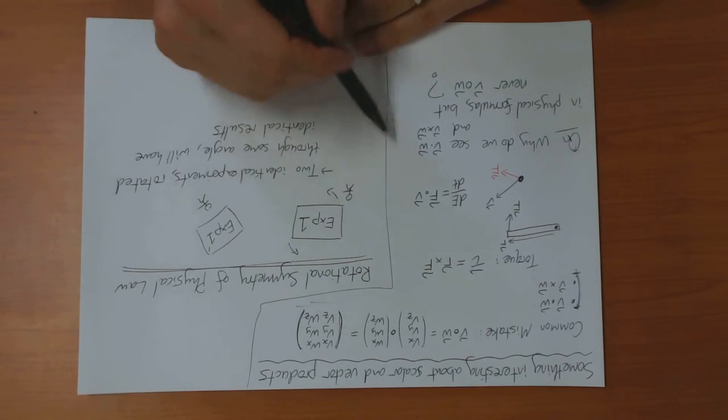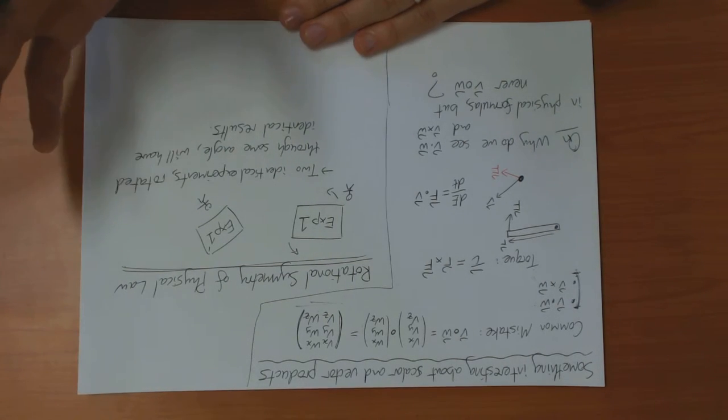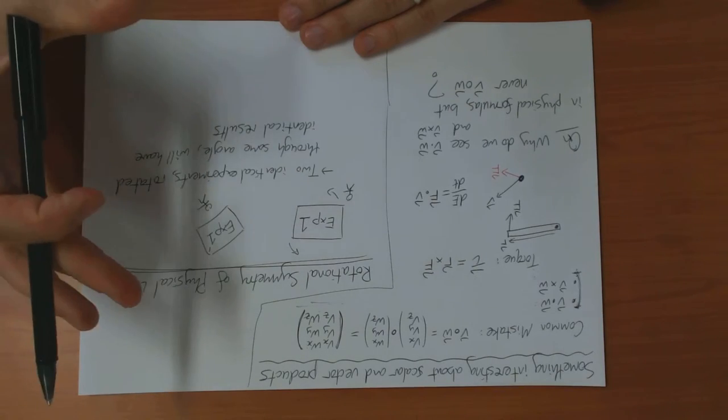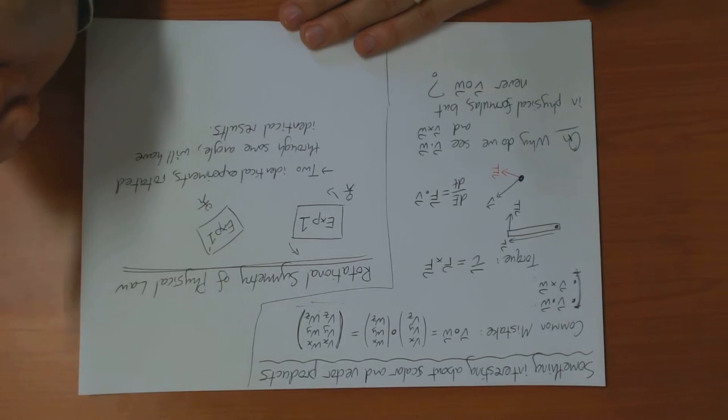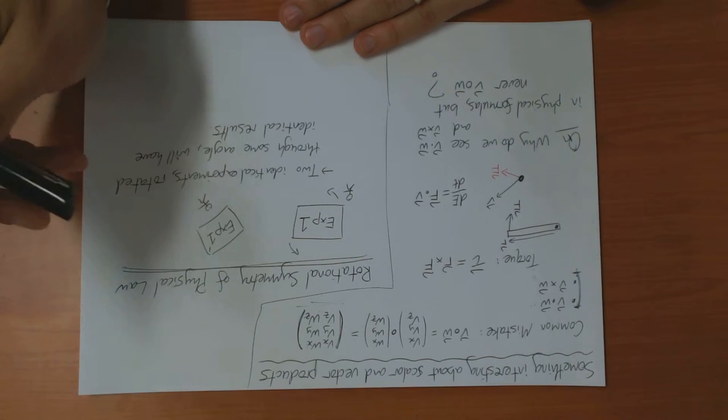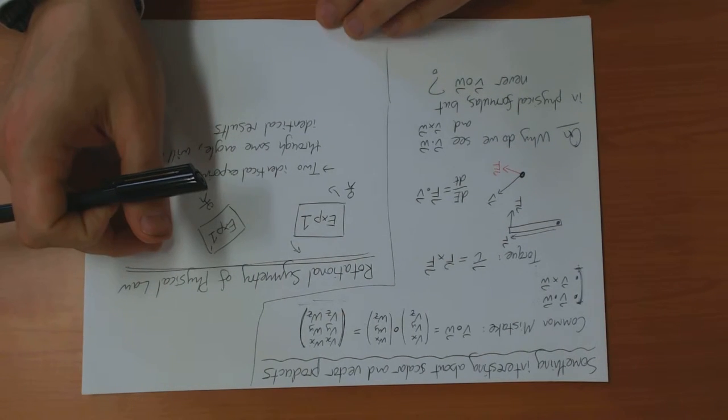And as far as we can tell, this is true of all physical laws. If you do an experiment, you take the same experiment and rotate it at an angle, then you must get the same result.